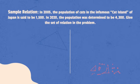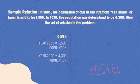Give the set of relation in the problem. From the statement above, we can list down the given as year 2005 with 1,500 population, and year 2020 with 4,300 population.